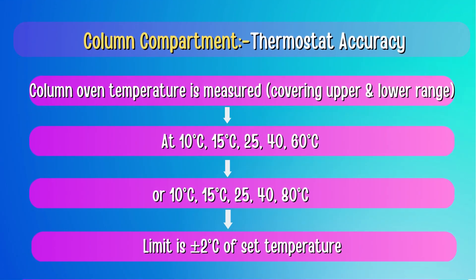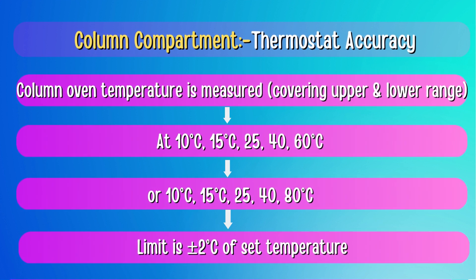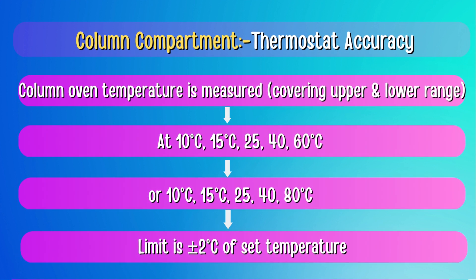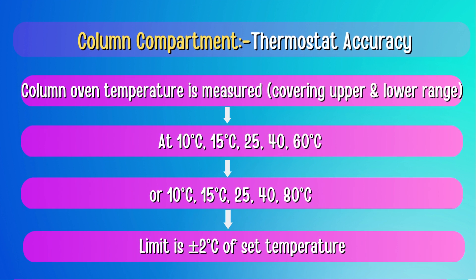For the Column Compartment, Thermostat Accuracy is performed by measuring column compartment temperature at 10°C, 15°C, 25°C, 40°C, 60°C, and up to 80°C, depending upon the make of HPLC being used. The limit is ±2°C of the set temperature.